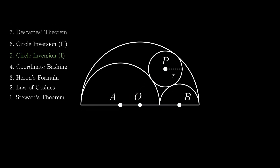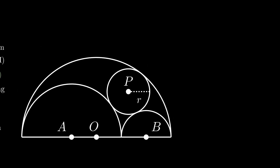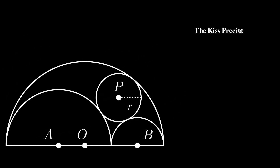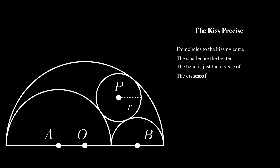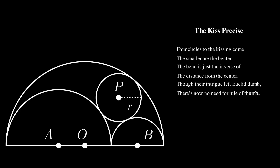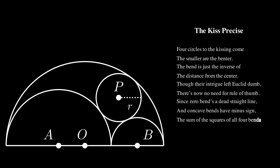They also mentioned Descartes' theorem, or the kissing theorem, which one Nobel laureate in chemistry was so fond of that he wrote this poem about it: 'Four circles to the kissing come, the smaller are the benter. The bend is just the inverse of the distance from the center. Though their intrigue left Euclid dumb, there's now no need for rule of thumb. Since zero bends a dead straight line and concave bends have minus sign, the sum of the squares of all four bends is half the square of their sum.'